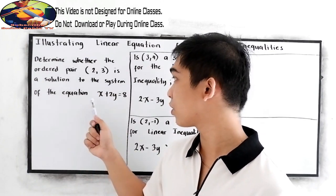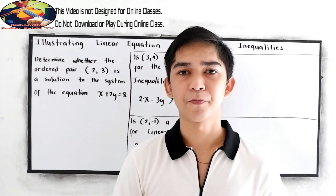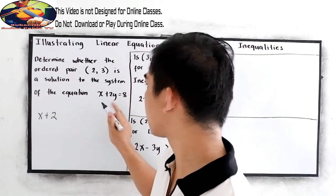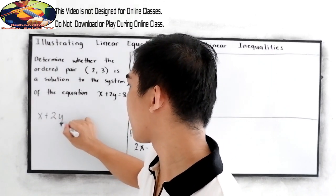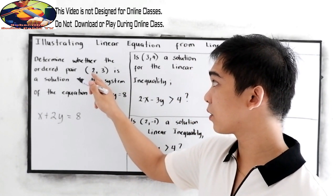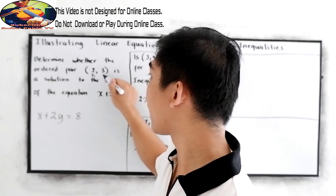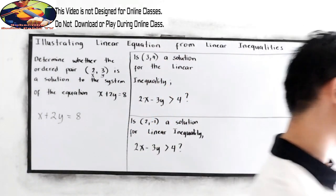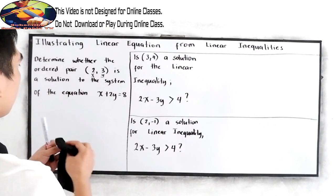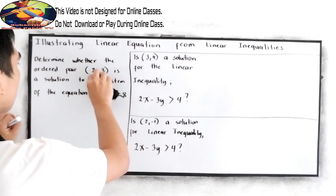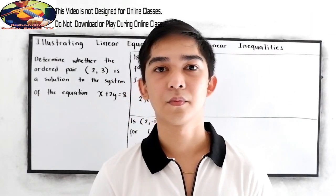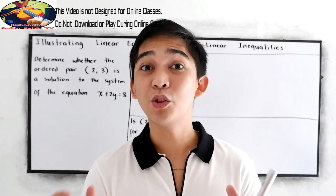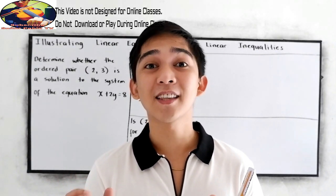Determine whether the ordered pair (2, 3) is a solution to the equation x plus 2y is equal to 8. All we need to do is copy the equation: x plus 2y is equal to 8. We have the ordered pair 2 comma 3, where 2 is our x and 3 is our y.